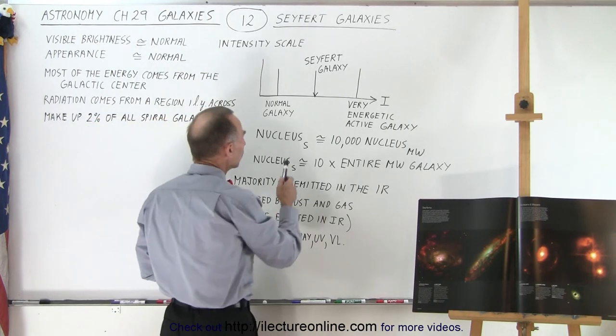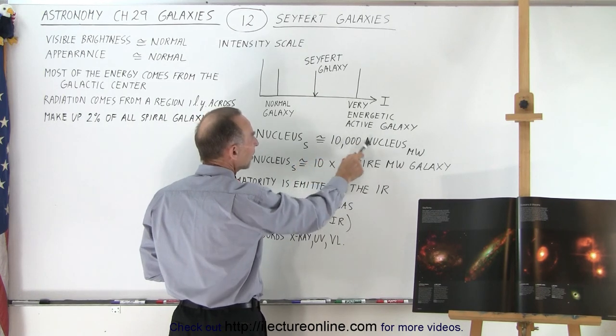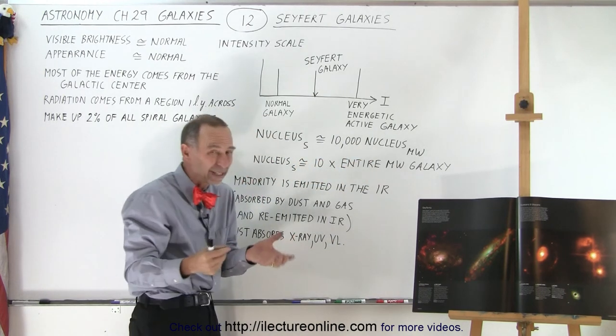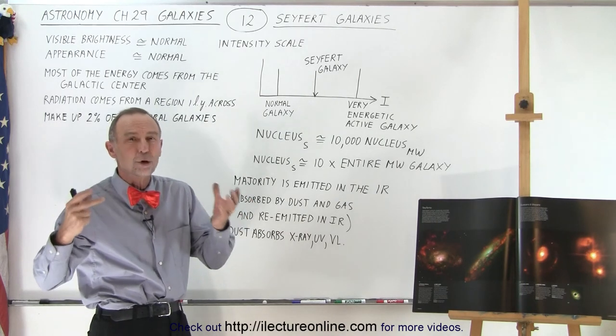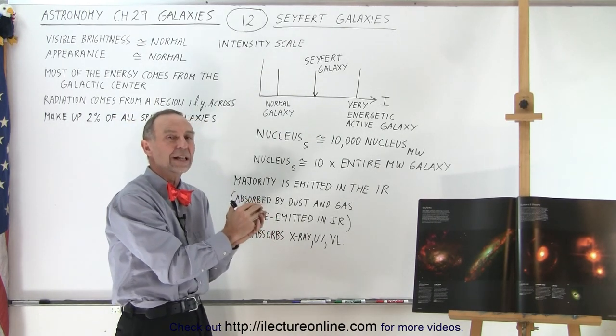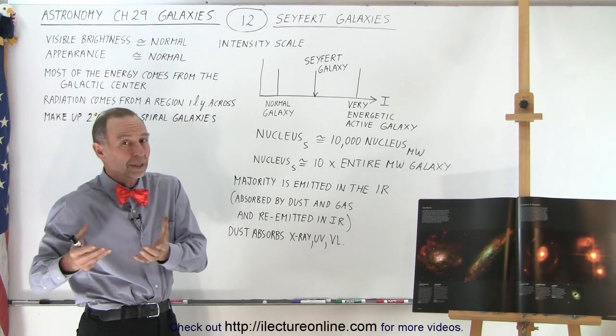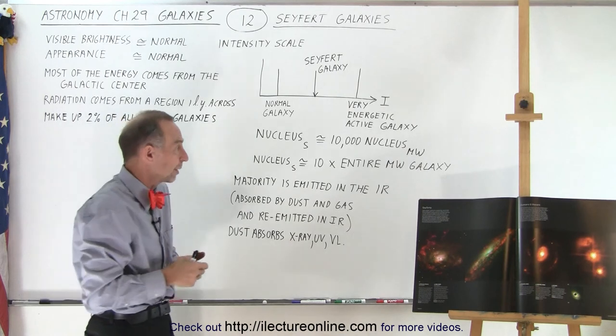Now, the energy we get out of the nucleus of the Seyfert galaxy is about 10,000 times the energy we get out of the nucleus of the Milky Way galaxy. So there's absolutely no comparison between the two. Massive amount of energy coming from the Seyfert galaxy at the very center, compared to a normal galaxy like the Milky Way, which is virtually zero in comparison.